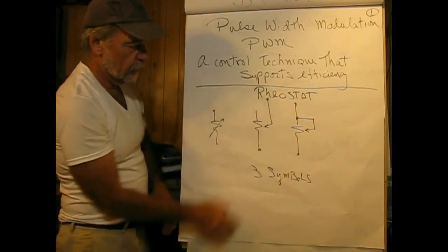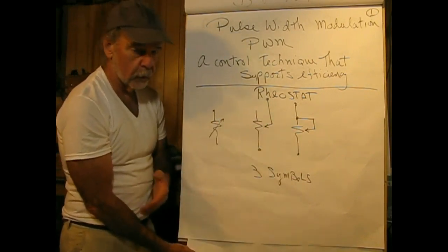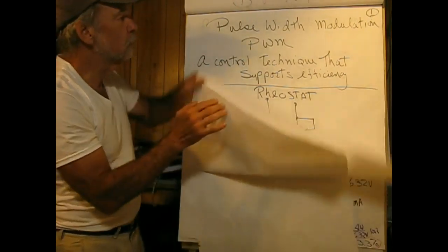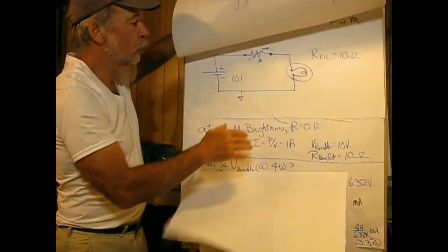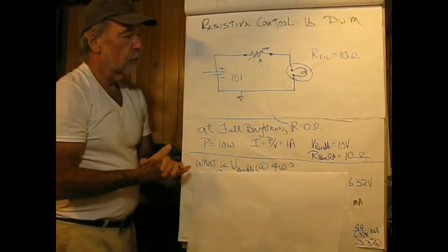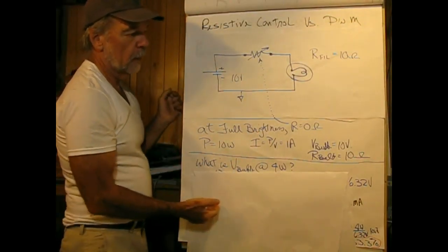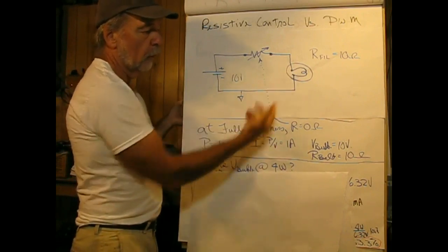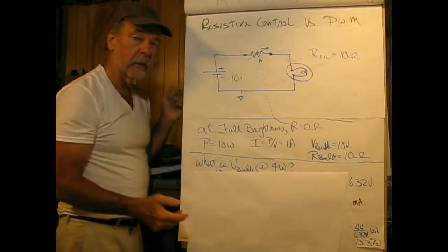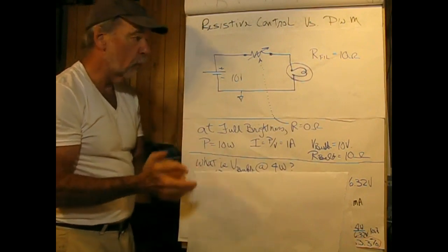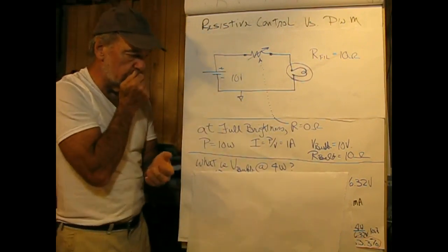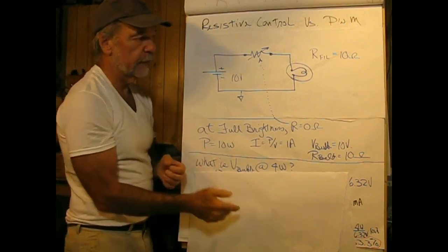What we're going to do is take a rheostat in series with a load, do a little bit of math, and then compare it to the PWM. This is going to be our resistive circuit. Our load in this case is going to be a light bulb, and the resistance of the filament we're going to let be equal to 10 ohms, with a rheostat in series with it.